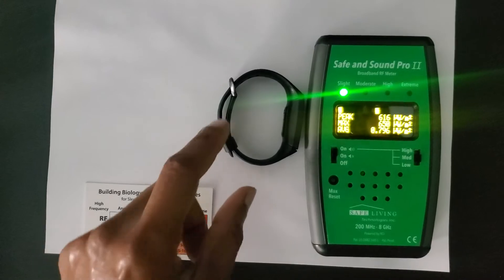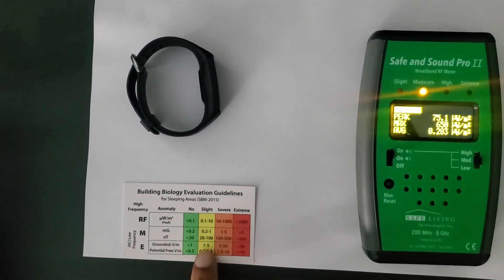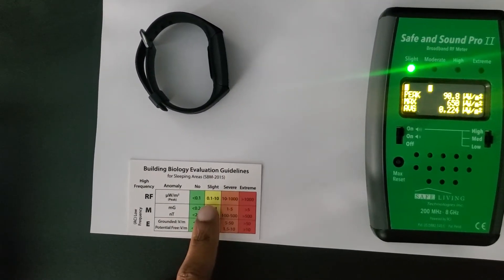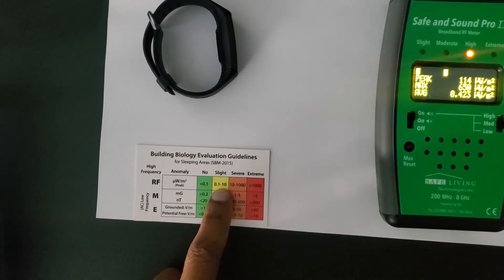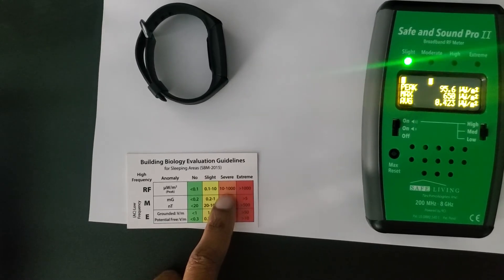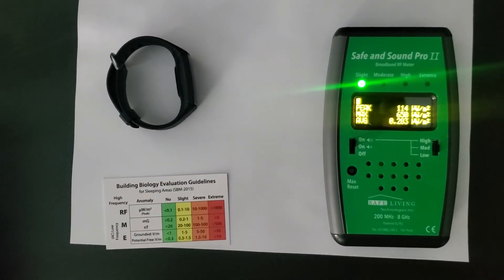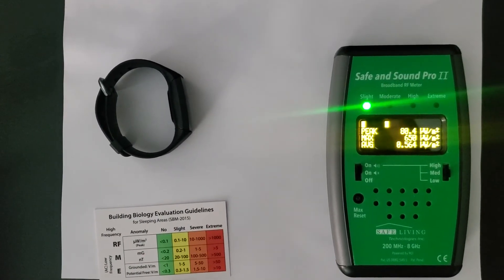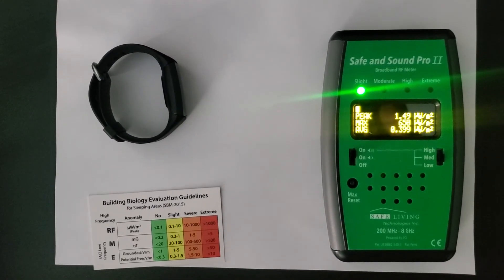Pulsing at 700. So the recommended guideline you can see is microwatts per meter square below 10 is slight. Severe is 10 to 1000. And we're getting around a max peak so far of 650.